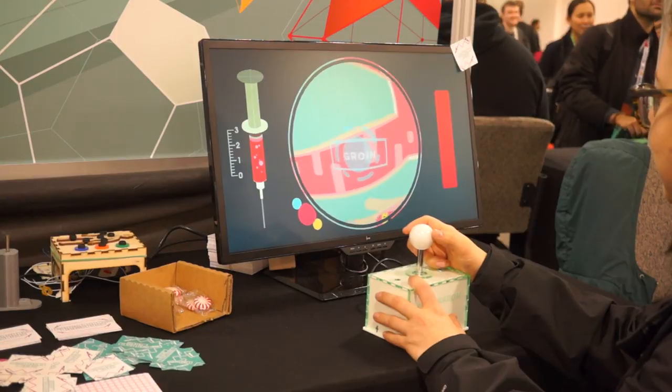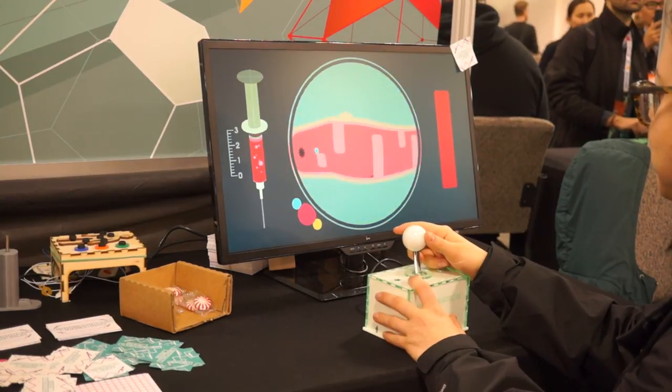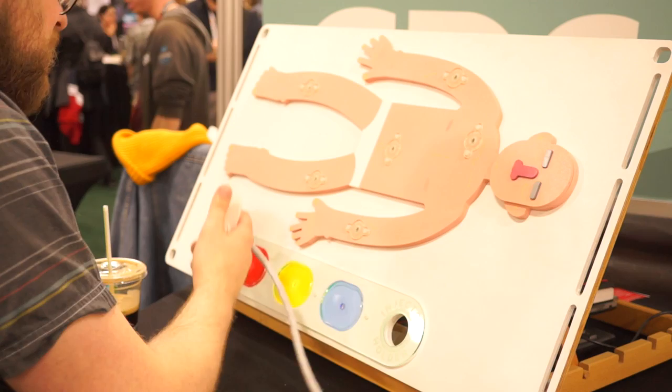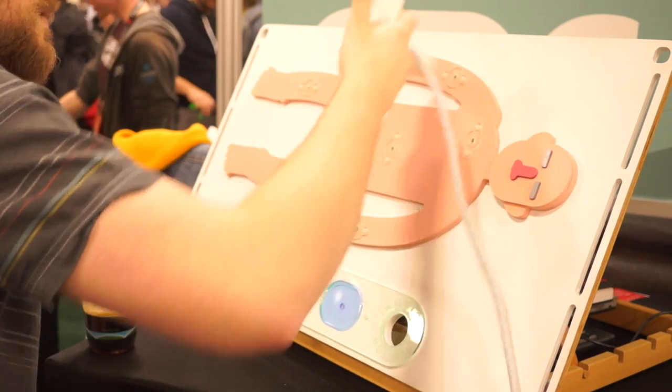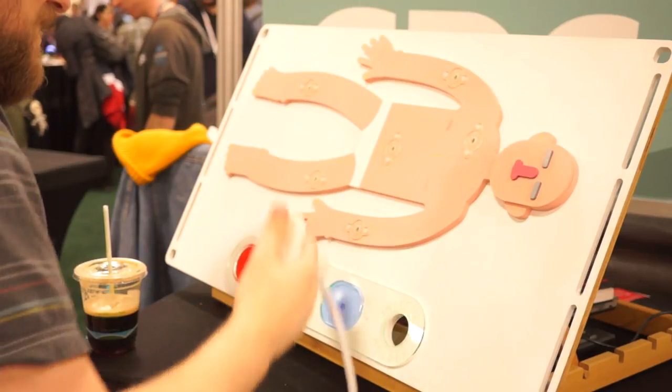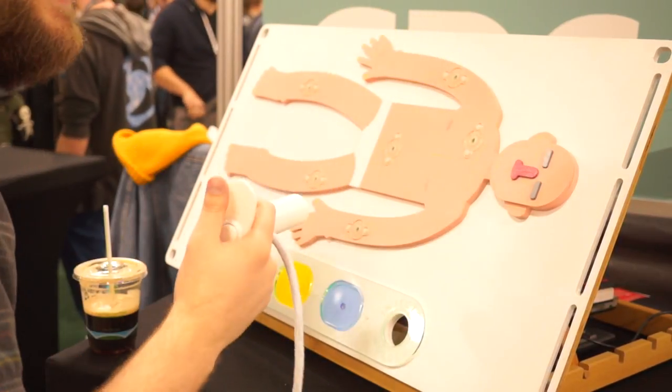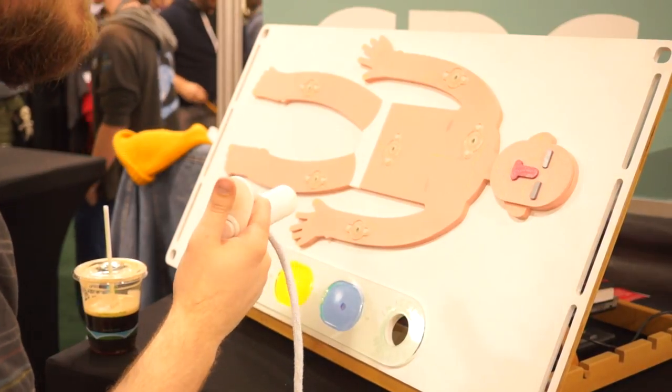With the information that they're seeing, they then have to relay to the injector where the bacteria is at and what vaccine they need to use to kill the bacteria. And then the injector uses the 3D printed injector with the human body to get the vaccine and administer where it needs to in the body.